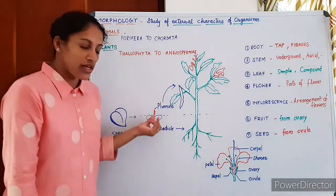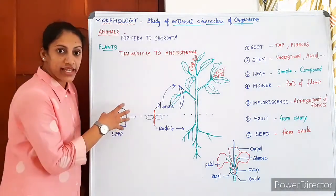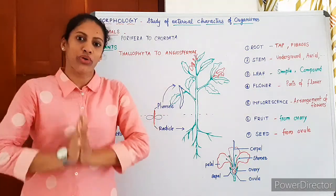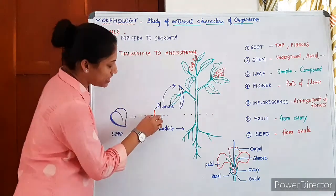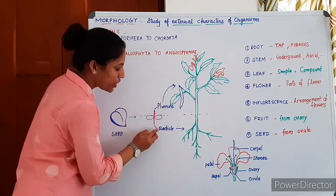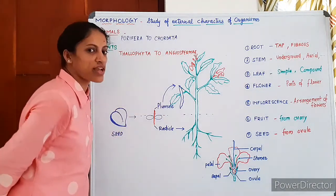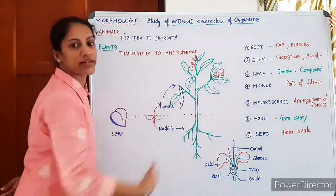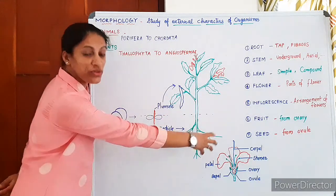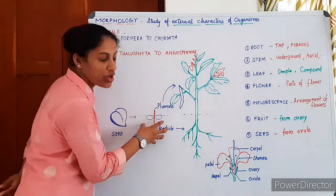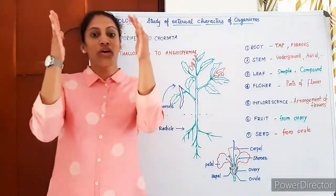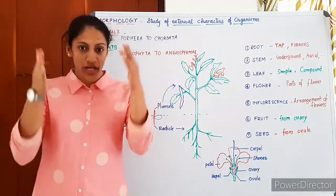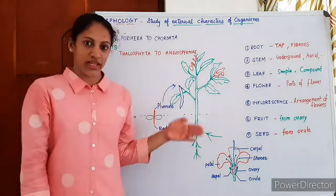A seed consists of a seed coat covering and an embryo inside. The embryo has a central axis which has a radicle and a plumule. The radicle is the part of the embryo which develops into the root system of the plant, and it is the plumule which develops into the shoot system. So morphologically, a flowering plant has two major systems: the underground root system and the mostly above-ground shoot system.